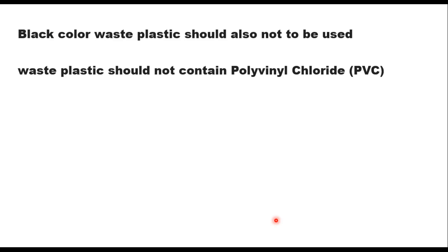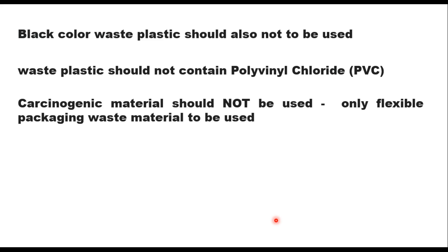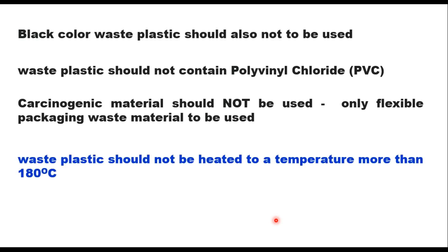Waste plastic should not contain polyvinyl chloride (PVC) because PVC releases lethal levels of dioxins at high temperatures. Carcinogenic materials should not be used; only flexible packaging waste material should be permitted in road construction. Thermoplastic materials are likely to emit gases and may undergo thermal degradation at temperatures higher than 180°C. Therefore, it is essential to ensure that waste plastic is not heated to more than 180°C under any circumstance.